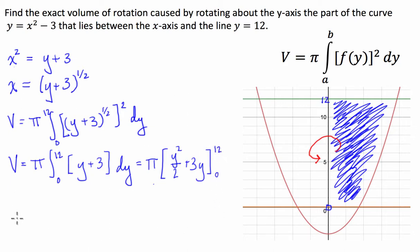Cool. So therefore, the volume is going to be equal to, put 12 into our function, we've got 144 over 2, which is 72, plus 36. Oh, hang on a sec, guys.